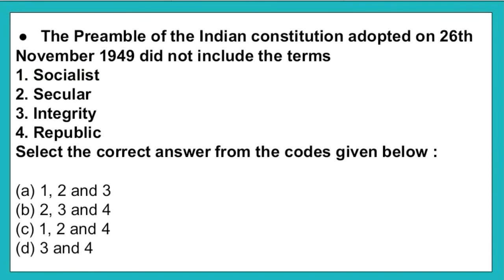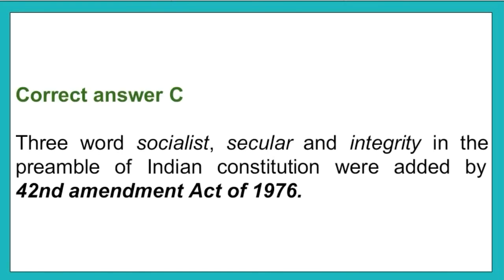The next question: The preamble of the Indian constitution adopted on 26 November 1949 did not include the terms — one: socialist, two: secular, three: integrity, four: republic. Select the correct answer from the code given below. Option A: one, two, and three. Option B: two, three, and four. Option C: one, two, and three. Option D: three and four. The correct answer is option C. The three words — socialist, secular, and integrity — were added to the preamble of the Indian constitution by the 42nd Amendment Act of 1976.